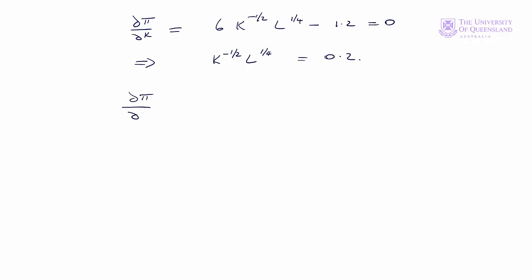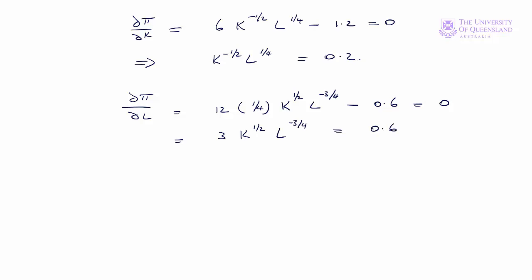∂π/∂L: we'll have 12, the exponent was 1/4. K we're treating as a constant, so it'll be K to the half, L to the 1/4 minus 1, so it'll be minus 3/4. The K term is a constant so that's equal to 0, so we'll have minus 0.6, differentiating 0.6L. Set that equal to 0 — that gives us 3 times K to the half, L to the minus 3 quarters equals 0.6, which implies K to the half times L to the minus 3 quarters equals 0.2. Let's call that equation 1 and that equation 2.